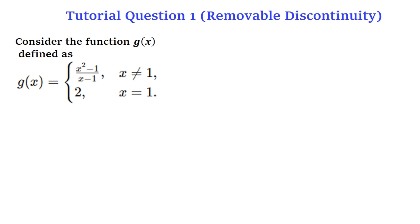The first thing to consider is called removable discontinuity. Let's look at the function g(x) on the screen. Is there anything like discontinuity here? Yes, because if you look at the first part — (x² - 1)/(x - 1) — the function exists only when x is not equal to 1. But the next part says g(x) equals 2 when x equals 1.